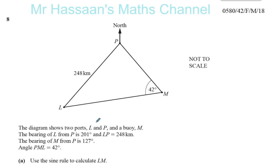Now, the diagram shows two ports, L and P, and a buoy, M. This is a buoy which is something that floats in the water, not a boy like a little child, something that floats in the water.